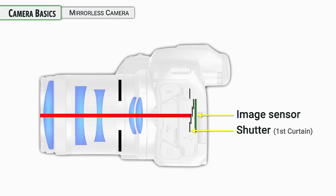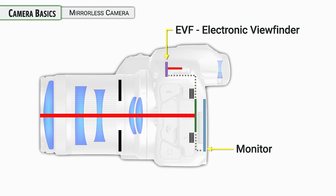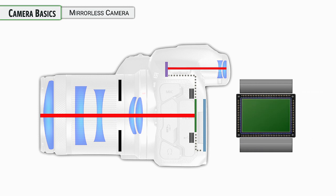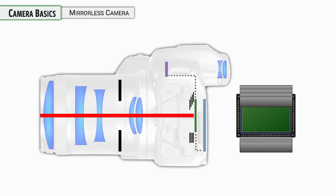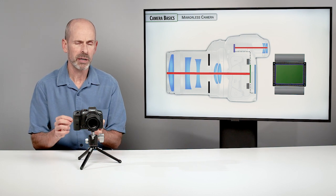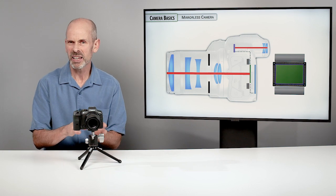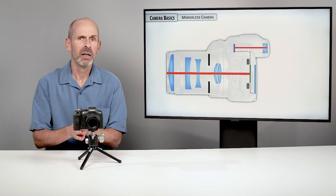Light is trying to get into the image sensor but it needs to get past the shutter, which has a first curtain and a second curtain. Being a mirrorless camera, the shutter needs to be opened so you can view through the monitor or electronic viewfinder. When taking a photo, the shutter first closes so the sensor can prepare, then opens to capture the image, then closes with the second curtain. We'll talk more about shutter control options in section four.